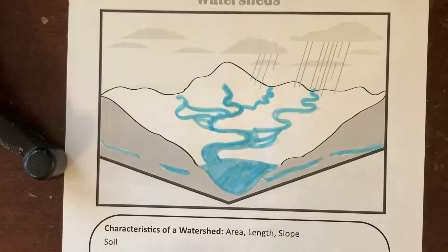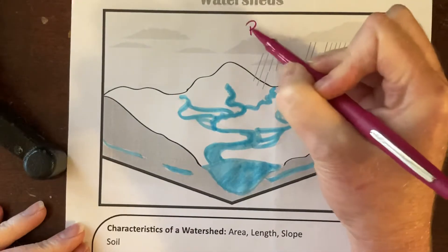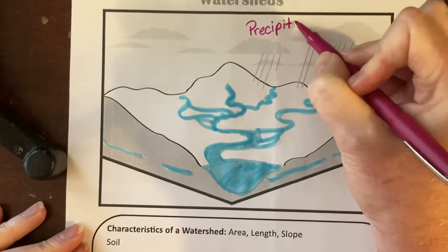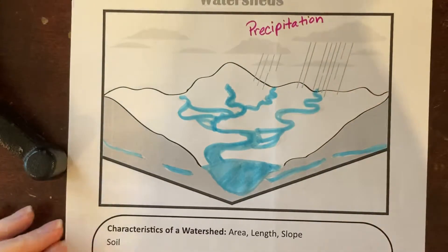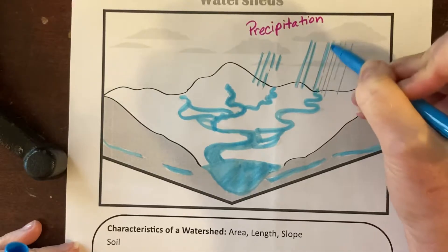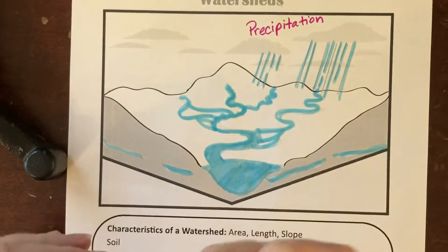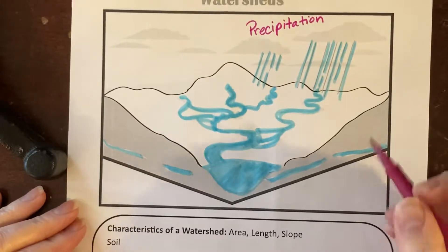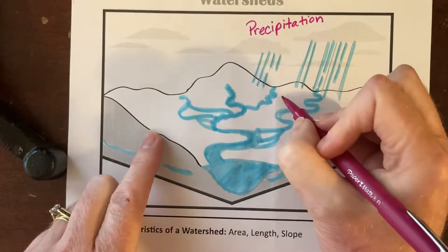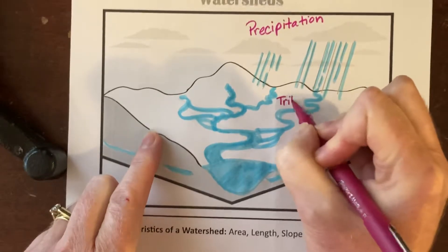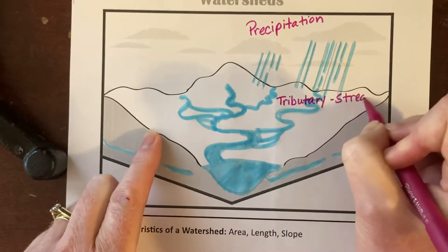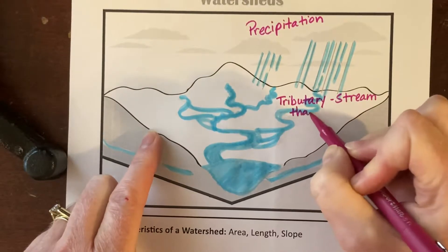Let's go ahead and mark some things down. First we have precipitation as part of our water cycle. We can mark that in blue, showing that when rain comes down it's going to run off — gravity pulls it downward — and it's going to flow first into creeks and streams, which we call tributaries. A tributary is a stream or creek that feeds into a main river.